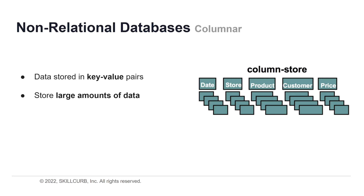A columnar database stores data using column-oriented models rather than by rows, making it suitable for analytical query processing. Row-oriented databases store each record in one or more contiguous blocks on disk, while column-oriented databases store each column in one or more contiguous blocks. Columnar storage lets you ignore all data that doesn't apply to a particular query, because you can retrieve information from just the columns you want.